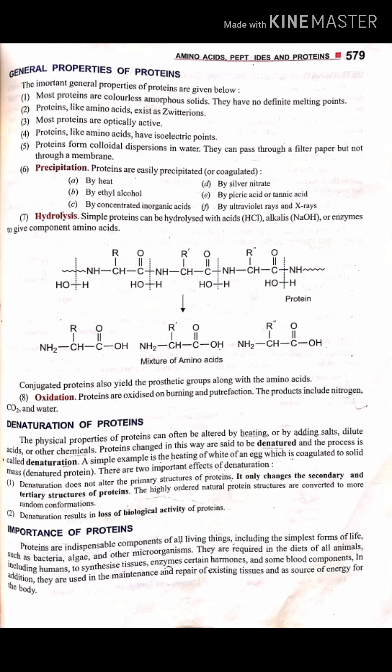Denaturation changes the main structure of the protein. Highly ordered protein co-structures are disrupted, and the organized structure is converted to a random conformation. At the endpoint of denaturation, the protein loses its biological activity.